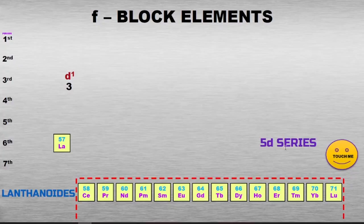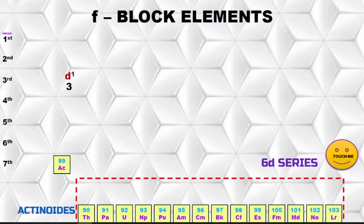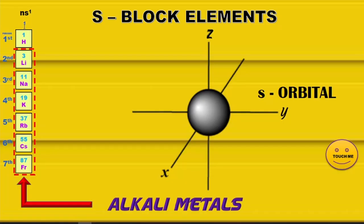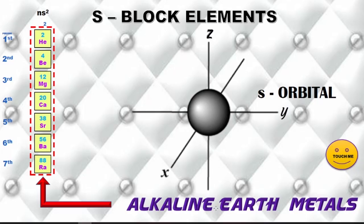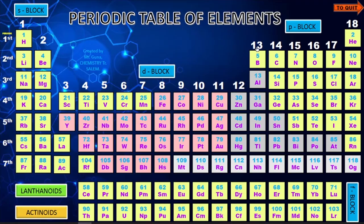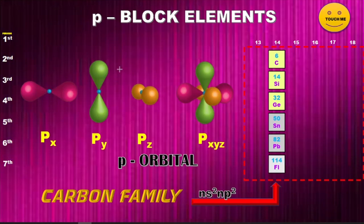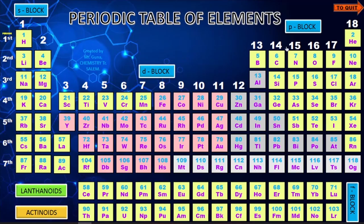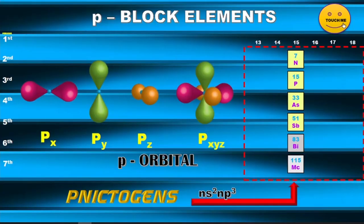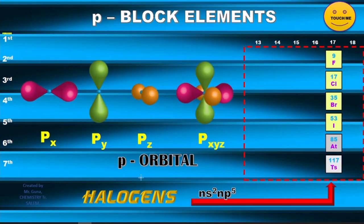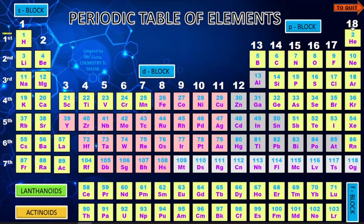Group-wise navigation is also available. The first group — alkali metals; the second group — alkaline earth metals; groups 3 to 12 — D block; 13th group — boron family; 14th — carbon family; 15th — nitrogen family; 16th — chalcogens; 17th — halogens; and the 18th — inert gases. Each group's general electronic configuration is provided.